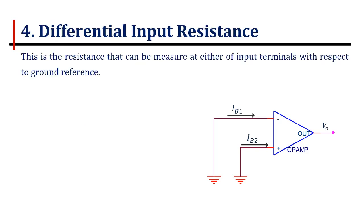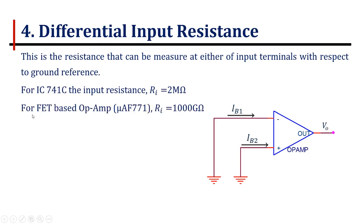Differential input resistance: this is the resistance that can be measured at either of the input terminals of the op-amp with respect to ground. For op-amp IC741C, the input resistance is 2 mega-ohms. It can be much higher if op-amp is FET based. Typically, in muAF771, the input resistance is 1000 giga-ohms.